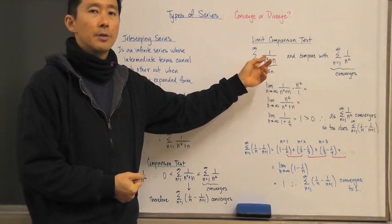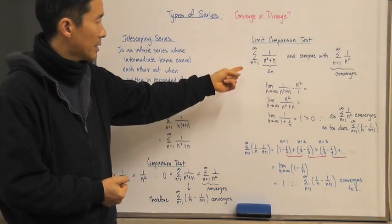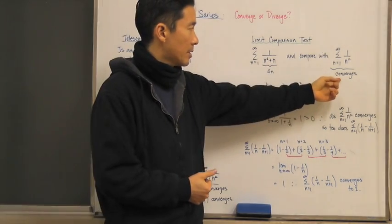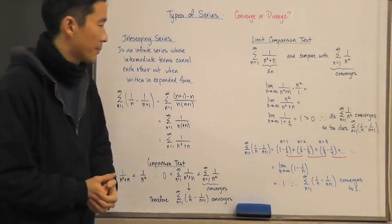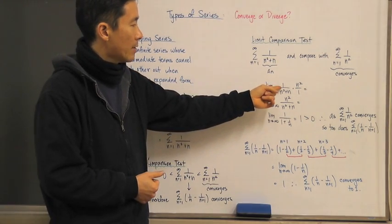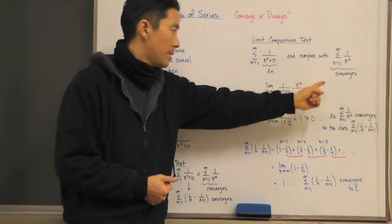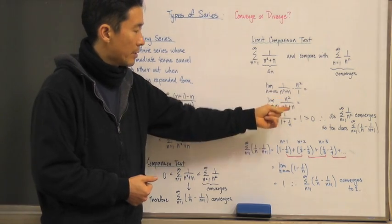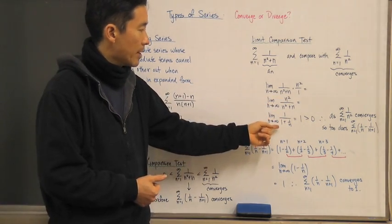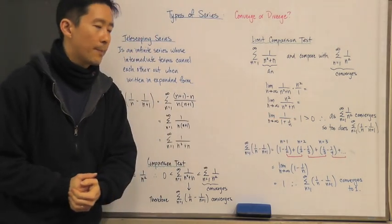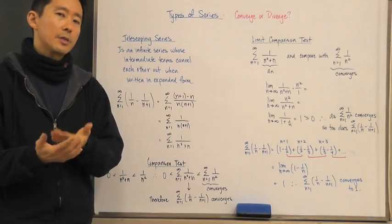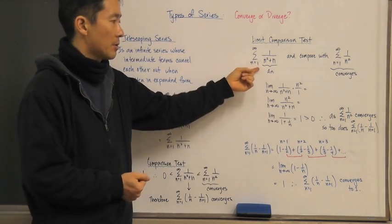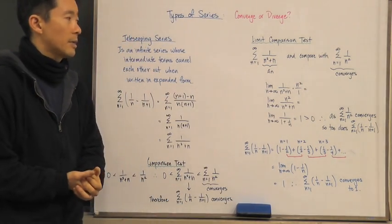Notice that this is a rational function in terms of n, so I'll compare it with one over n squared. Taking the limit of a_n over b_n — that is, n squared over n squared plus n — and dividing everything by n squared, I get a limit equal to one. Since that limit is a positive constant, and the comparison series converges, this series also converges. We can use the limit comparison test as well.